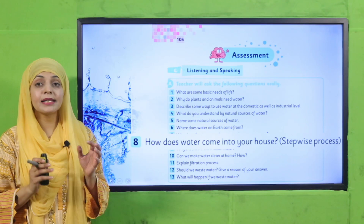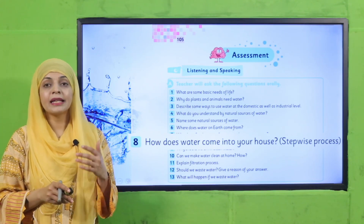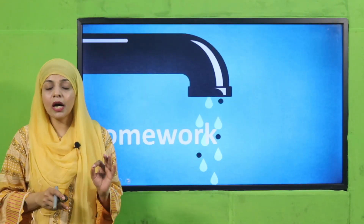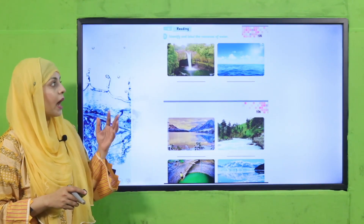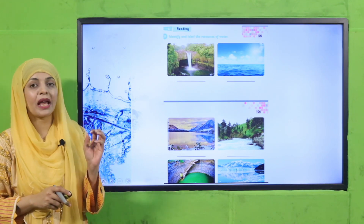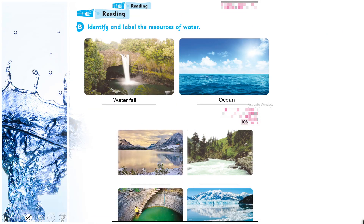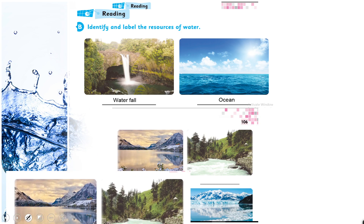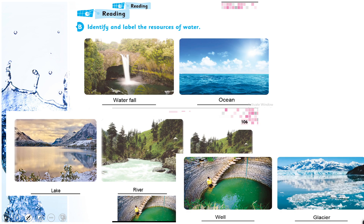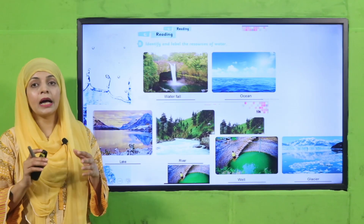Very good, very nice. Now you know how the water comes into your houses — kayse aapko tap mein paani available hota hai. Now quickly note down your homework. Here are some pictures of natural resources; you have to identify which resource it is. Carefully look at the picture and write underneath it. The first one is a waterfall, the second is an ocean, the next is a lake (surrounded by mountains), and the other one is a river. Then a well, and the last one — where there is lots of snow on the mountains — this is a glacier.